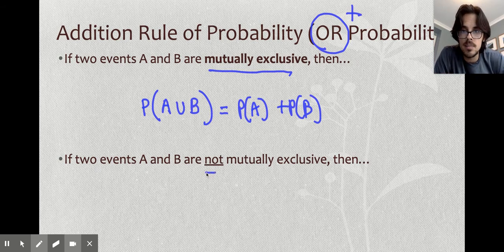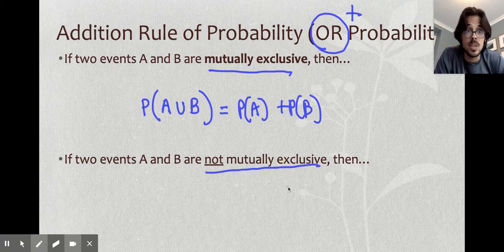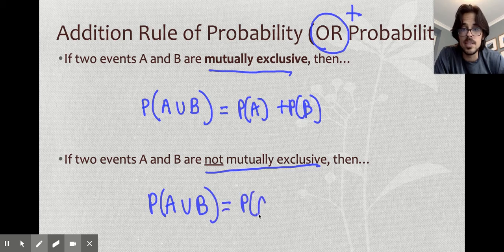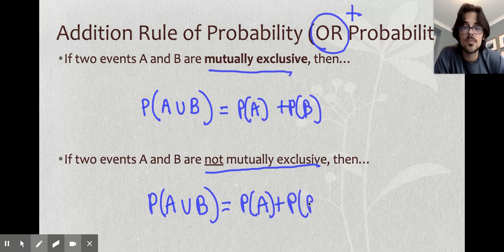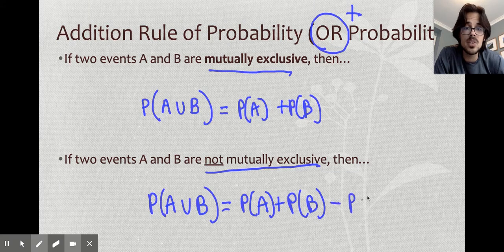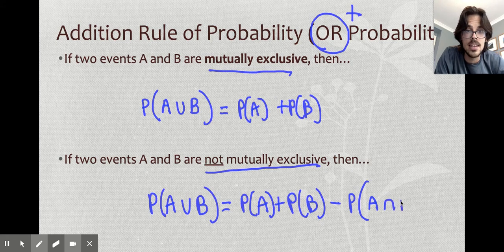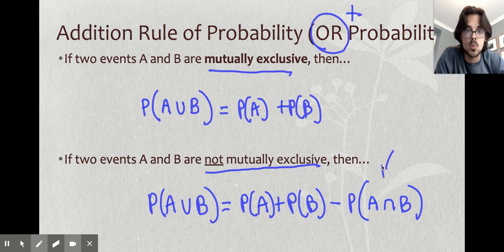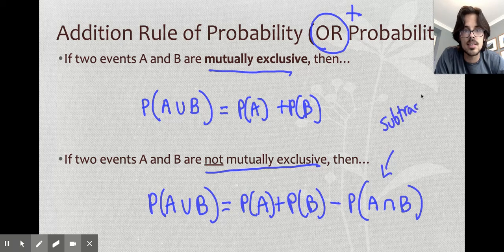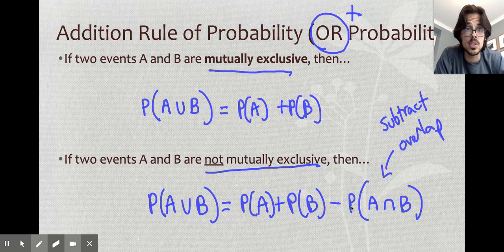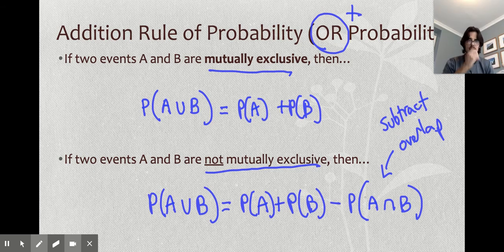But a lot of times in real life, events are not mutually exclusive. In other words, they overlap each other. So if they overlap, what you're going to do, you still need to add your two probabilities together. But after you do that, you have to subtract out the stuff you double counted. The stuff you double counted would be A and B, the intersection. So what this means is that you have to subtract the overlap. This formula is on your formula sheets written just like this on the first page.